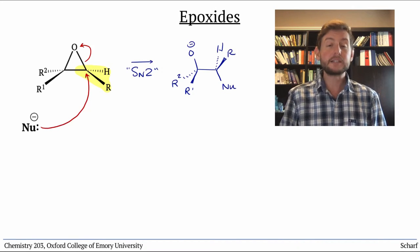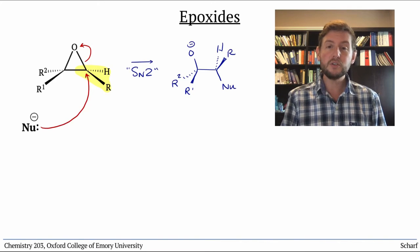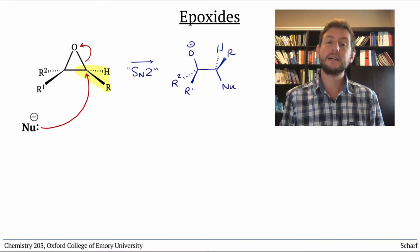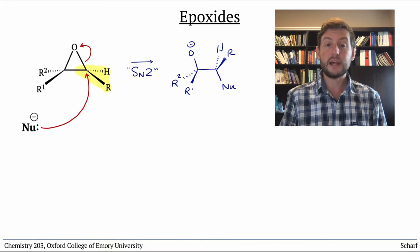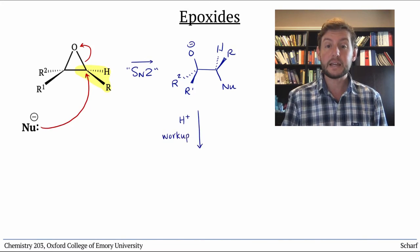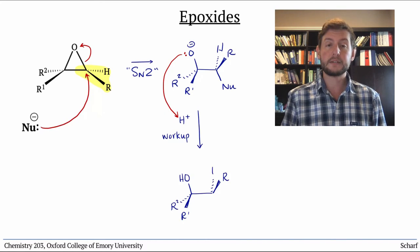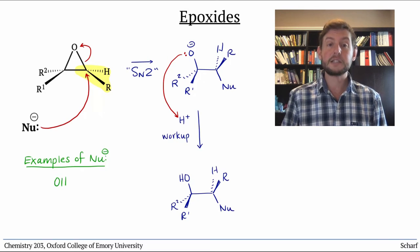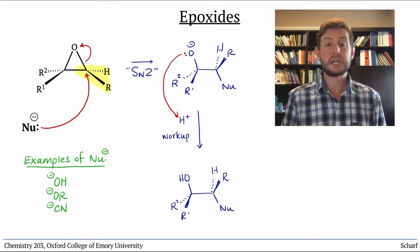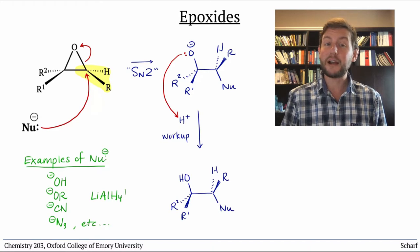Nevertheless, under controlled, safe laboratory conditions, most strong nucleophiles will open epoxides at the less substituted site. The conditions of these reactions are basic, so an H-plus workup is required to provide neutral products. Some examples of nucleophiles that perform this reaction are hydroxide, alkoxides, cyanide, azide, and others. Even our old friend lithium aluminum hydride can do this.